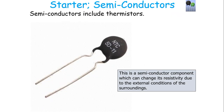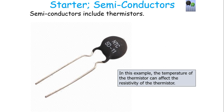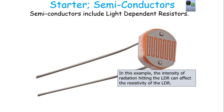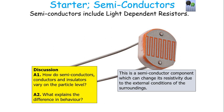We've got to compare and contrast that with semiconductors. Semiconductors include things like thermistors — a semiconductor can change its resistivity depending on the external conditions of the surroundings. In the example of a thermistor, the temperature can affect its resistivity. Another example of a semiconductor is a light-dependent resistor, or LDR, which can change its resistivity by the amount of radiation hitting it. We need to look at how these semiconductors, conductors, and insulators vary at the particle level.